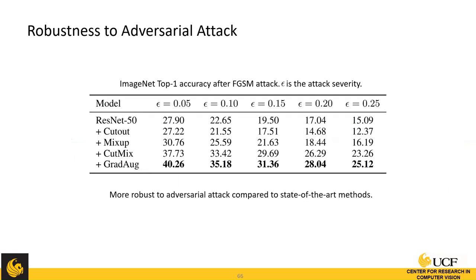We also show robustness to adversarial attacks, where our model outperforms other methods. The smoother loss landscape — achieved by perturbing model weights through sub-network sampling during training — provides robustness to input perturbations such as adversarial attacks.